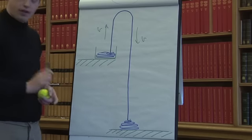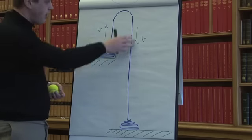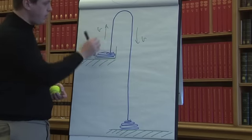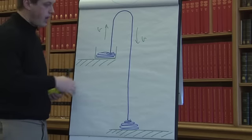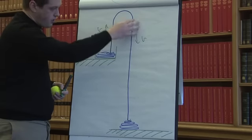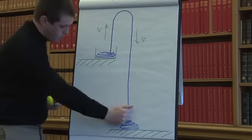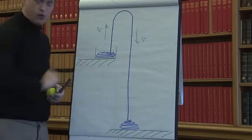In particular, in a force way of thinking about it, this part of the chain is longer and therefore heavier than this part of the chain. And so gravity pulls down harder on this part because it's longer, and therefore this part of the chain is pulled down and that drives the flow.